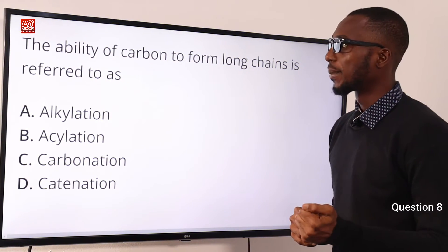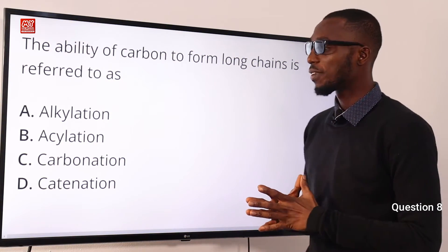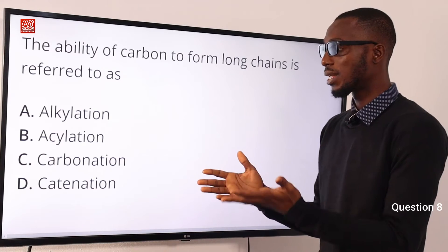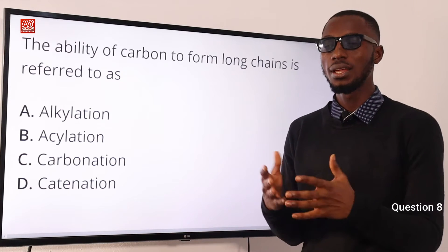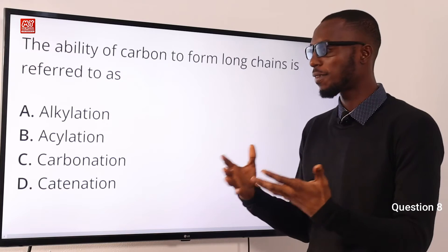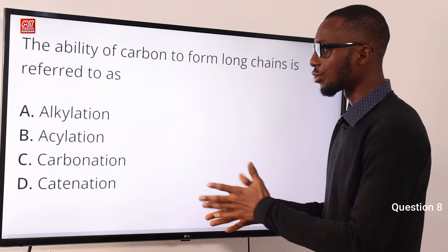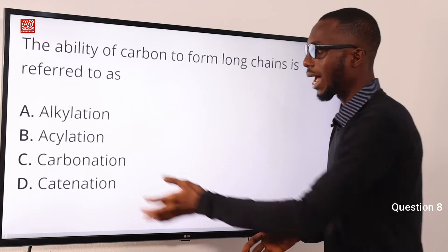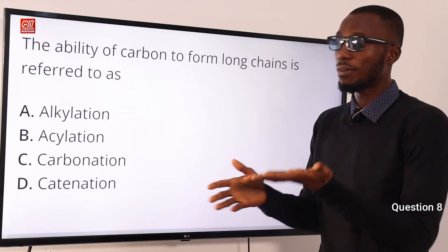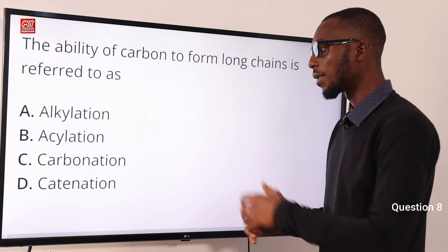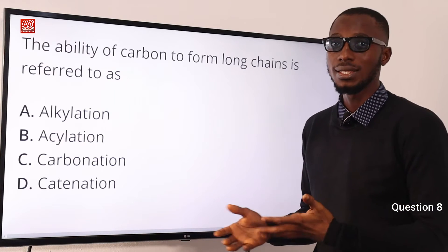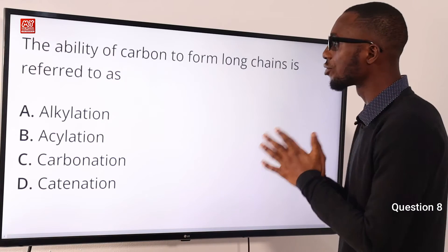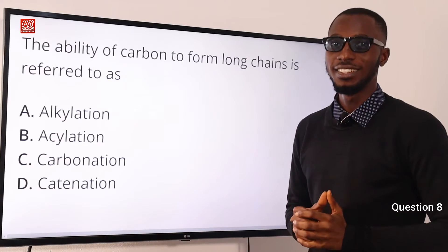Number 8. The ability of carbon to form long chains is referred to as catenation. When you have atoms of the same element coming together in a kind of bonding and they form a series or chain, that is catenation. Acylation is the transfer of an acyl group from one molecule to the other. Carbonation is the reaction of CO2 to give you bicarbonate, carbonic acid, carbonate. So the correct option is option D — the ability of carbon to form long chains is referred to as catenation.